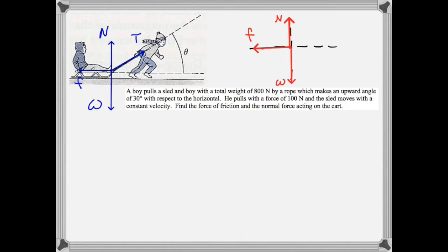Since the tension force does not lie along an axis, we'll have to resolve it into components. First, we have an upward component, which we'll call ty. And then a horizontal component, we'll call tx. Conceptually, you can think of tx as being the part of the tension that pulls the sled along. Ty partially supports the sled against gravity. Thus, the normal force is going to be less than it would have been if the rope had been horizontal. As expected, our components establish a rectangle of which the tension vector is its resultant.